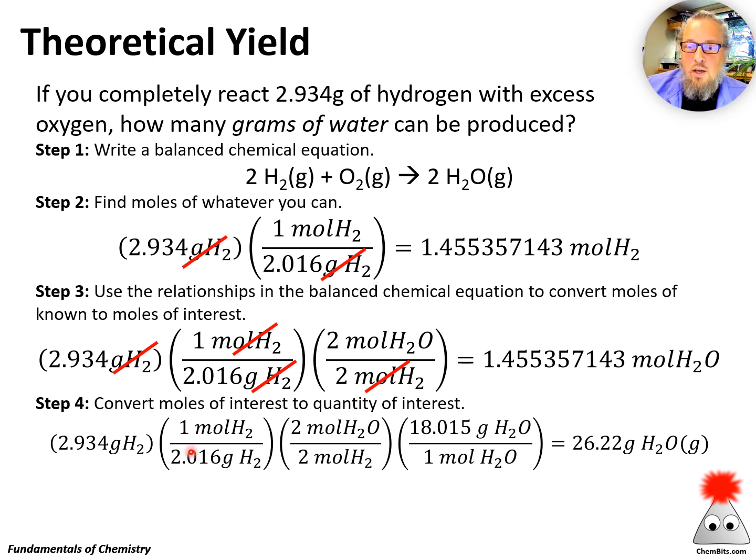That gives us moles of water. Convert moles of interest to quantity of interest, again, grams in our case. So these first three terms are the ones that we had up here. And now I've got the molar mass of water, 18.015 grams per mole. Just add it up off the periodic table. And we get a theoretical yield of 26.22 grams of water. Again, use the units to make sure you're setting these up in the correct direction, in the correct order. So that's theoretical yield. That's an important thing for us to know.